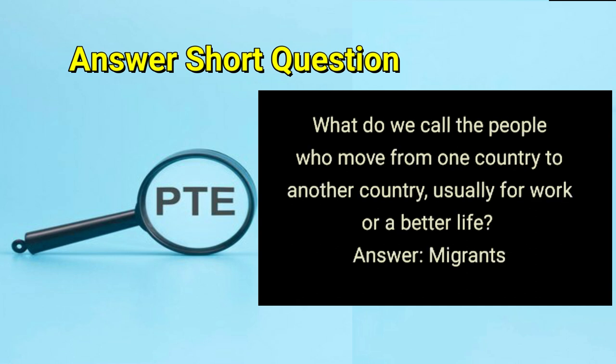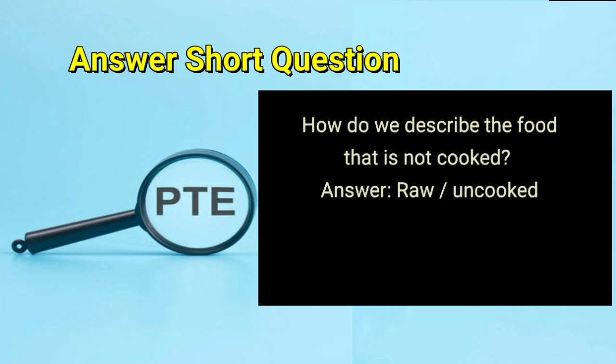What do we call the people who move from one country to another country, usually for work or a better life? Answer: migrants. How do we describe the food that is not cooked? Answer: raw or uncooked.